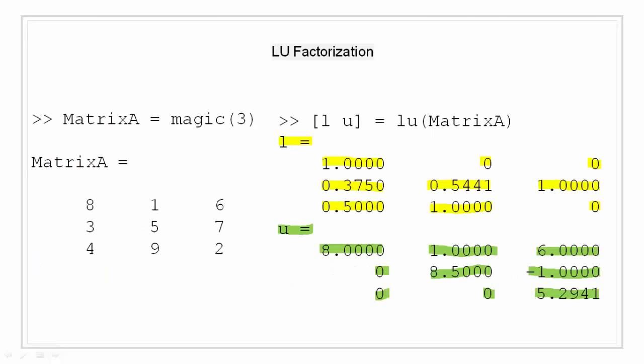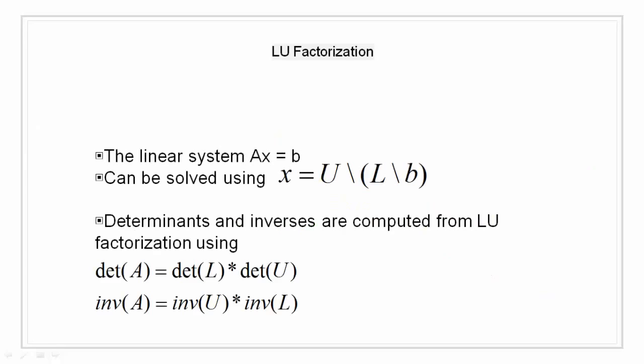Now moving to example I am going to create a non symmetric matrix A using the function magic by passing three so I get non symmetric matrix A. Now using the function LU and passing matrix A as an argument I am going to get an LU decomposition. As we can see L is a lower triangular matrix and U is an upper triangular matrix. The LU factorization of matrix A allows the linear system AX equal to B to be solved quickly with equation X equal to U backslash L backslash B. The determinants and inverses are computed from the LU factorization using determinant of A is equal to multiplication of determinant of L and U. Similarly inverse of A is the multiplication of inverse of U and L. Do note that in determinant L fore fronts the multiplication and in inverse U fore fronts the multiplication.